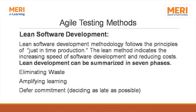Agile Lean Software Development is another testing method of Agile model. Lean software development methodology follows the principle of just-in-time production. The lean method focuses on increasing the speed of software development and reducing cost. Lean development can be summarized in seven phases including eliminating waste, amplifying learning, defer commitment, and deciding as late as possible.